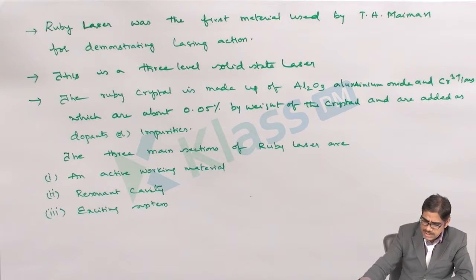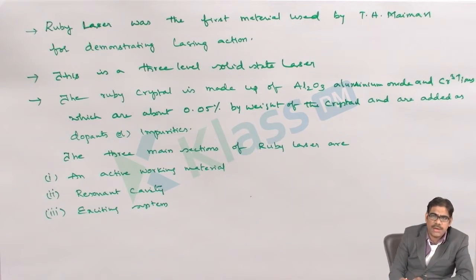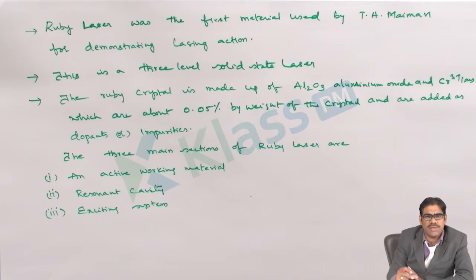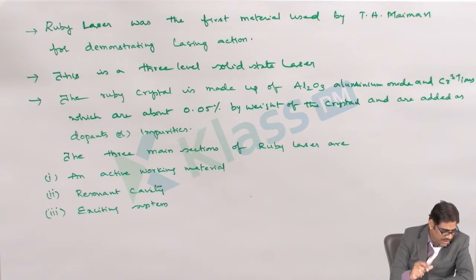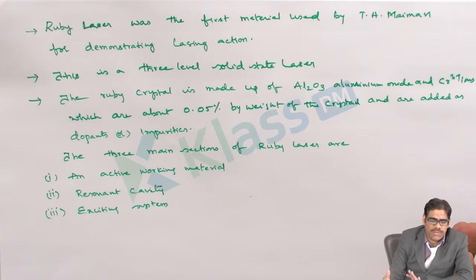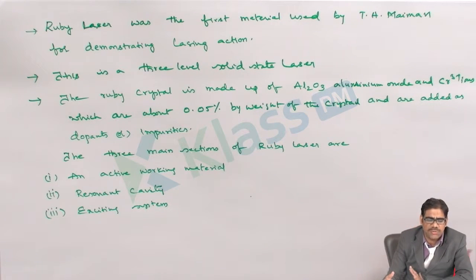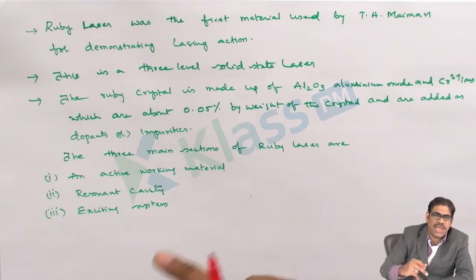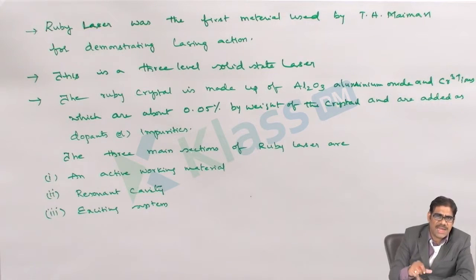The active working material is a cylindrical rod or ruby rod which is 0.5 cm in width and 10 to 30 cm long. The resonant cavity is provided by the tube equipped with partially and fully reflecting mirrors on either side. The exciting system makes use of a helically shaped xenon flash lamp which acts as the exciting system.